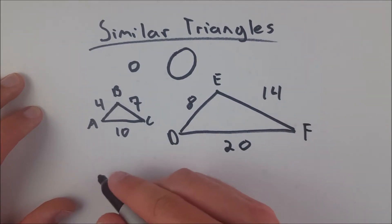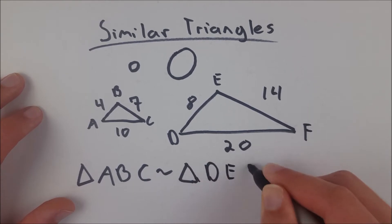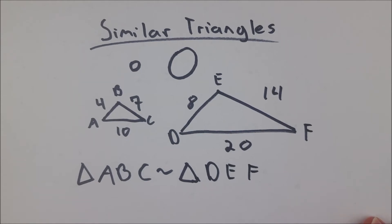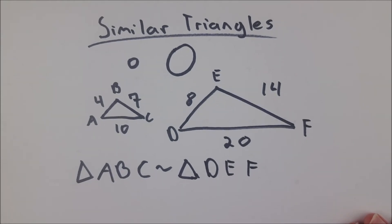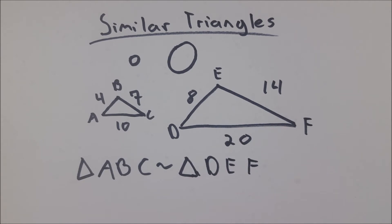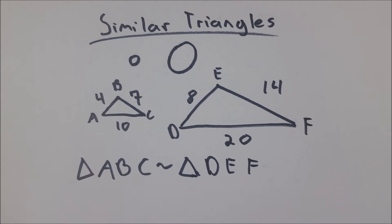If these triangles are similar, we could say that triangle ABC is similar, using this sign here, to triangle DEF. And the order of the letters is very important, because the order of the letters basically defines what sides of these triangles are corresponding sides. If two triangles are similar, the ratios of their corresponding sides have to be equal.